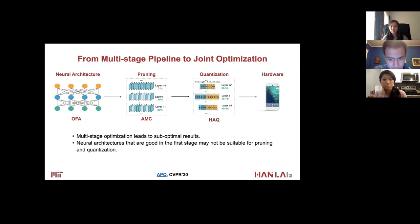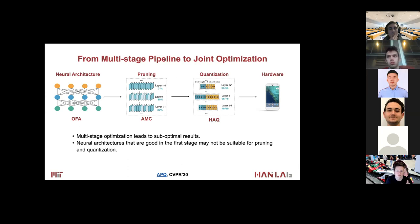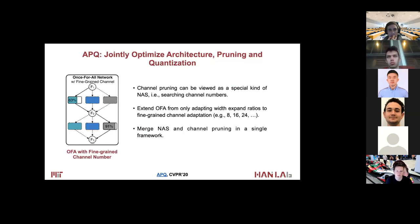Besides designing specialized neural architectures, to improve the efficiency of neural networks, we typically have additional pruning and quantization steps. Conventionally, we use a three-stage pipeline: first design a neural network architecture, then prune it, then quantize the model, and finally deploy it on the target hardware. But this may not be the optimal solution, since neural networks that are good in the first stage may not be suitable for pruning and quantization. With Once-for-All, we can afford to jointly optimize the neural architecture, pruning, and quantization.